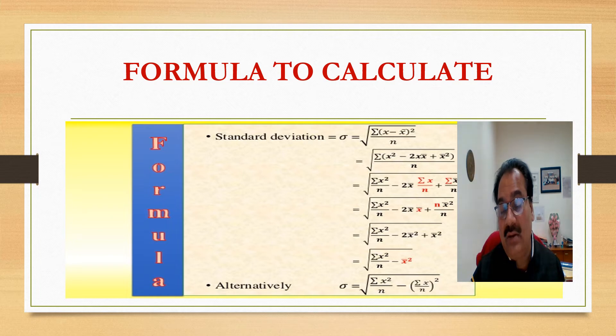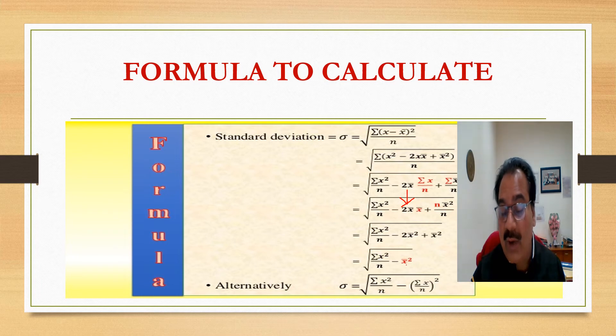And then from here to here, you can write. And in the last, you will get this result, which is very important: the summation of x square by n minus x bar square. And x bar square can be also written like this: the summation of x by n whole square.